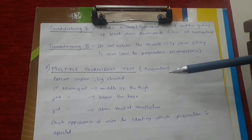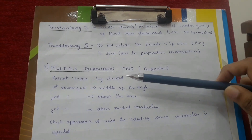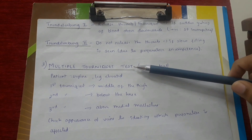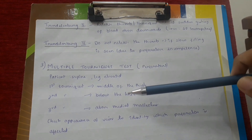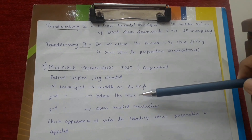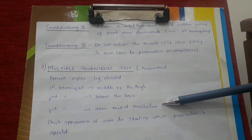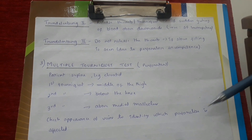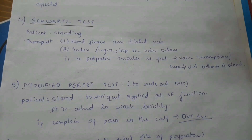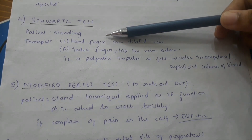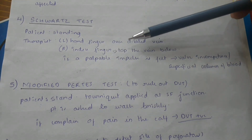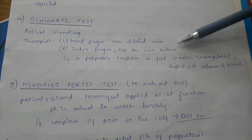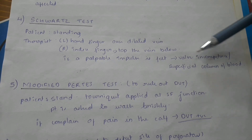The Multiple Tourniquet test is done to check for perforators. The patient lies supine and the leg is elevated. Three tourniquets are applied: the first around the middle of the thigh, the second below the knee, and the third above the medial malleolus. Appearance of veins is checked to identify which perforator is affected. The Schwartz test: the patient stands upright, the therapist's left-hand fingers are placed over the dilated vein, and the right hand's index finger taps the vein below — a palpable impulse suggests valve incompetence.